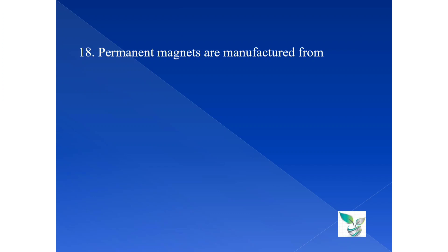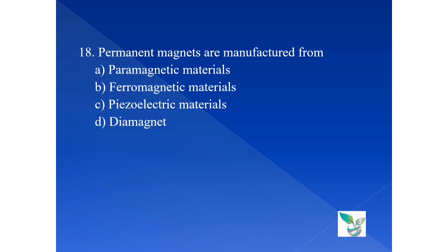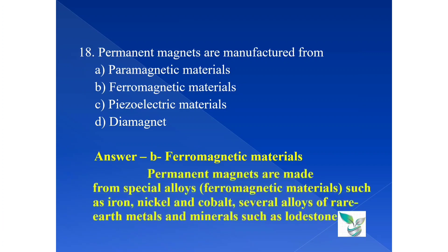Moving on to the next question, question number 18. Permanent magnets are manufactured from: option A paramagnetic materials, option B ferromagnetic materials, option C piezoelectric materials, and option D diamagnetic. The answer is option B ferromagnetic materials. Permanent magnets are made from special alloys, that is ferromagnetic materials, such as iron, nickel, cobalt, and several alloys of rare earth metals and minerals such as lodestone.